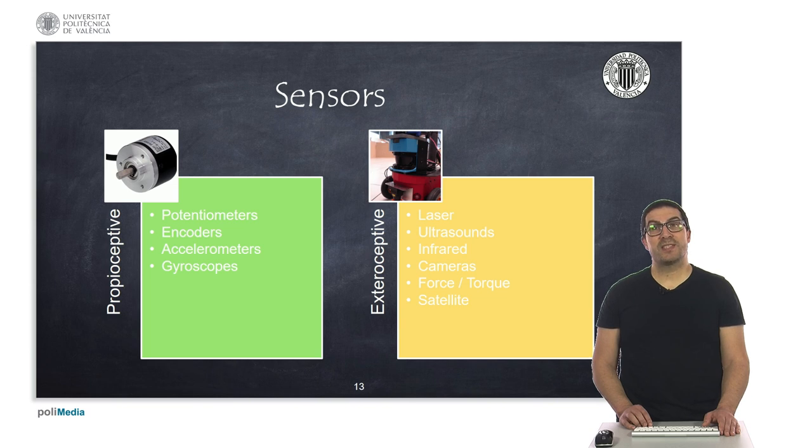Sensors used to measure external variables are known as exteroceptive sensors. There's a huge variety of sensors using different measuring principles and the technology they are based on. This is the case, for instance, of lasers, ultrasounds, infrared sensors, but also vision systems, force sensors, satellite-based location systems, etc.